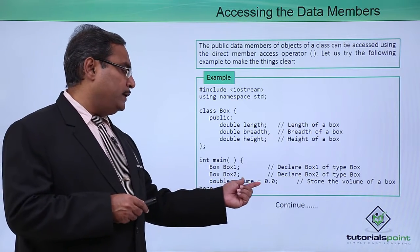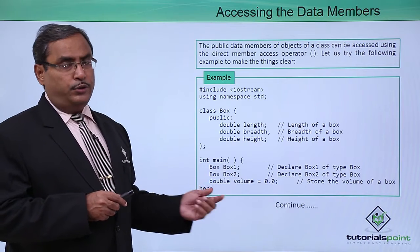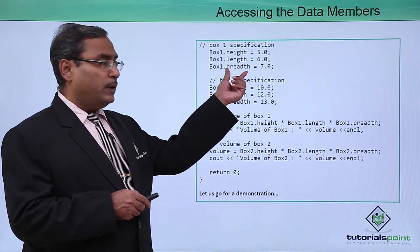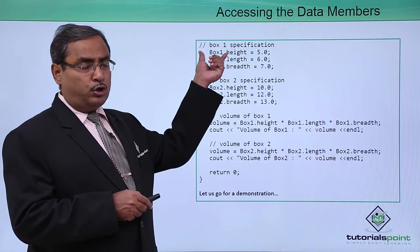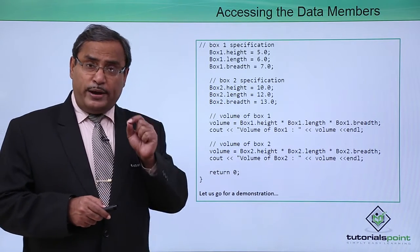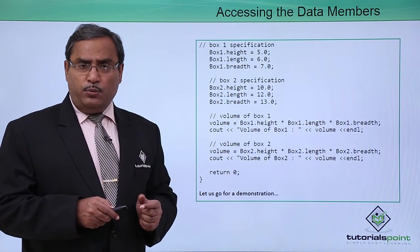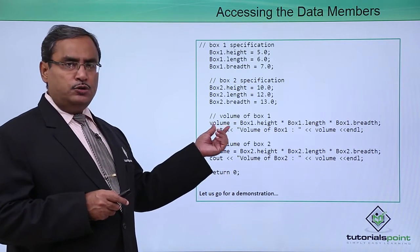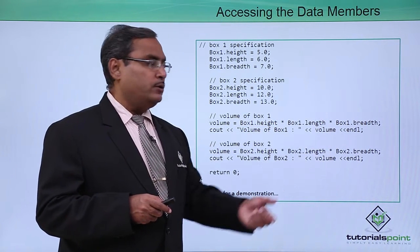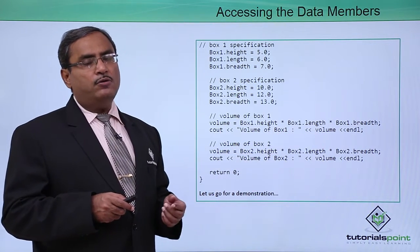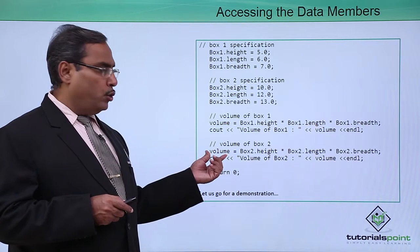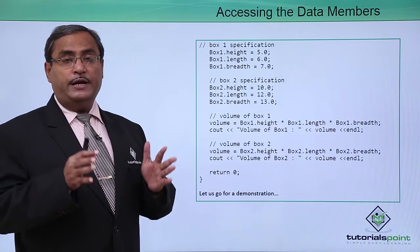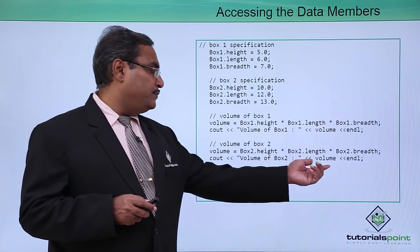We declare a double variable volume initialized to 0.0. Then we initialize box1's height, length, and breadth, and similarly box2's members, each with their respective values. Since these were declared under the public section, the member variables are accessible outside the class within the object's scope. Volume is calculated as box1.height × box1.length × box1.breadth and printed, then the same is done for box2.